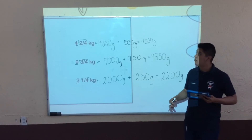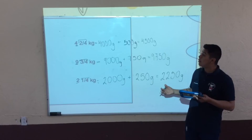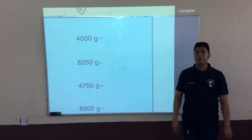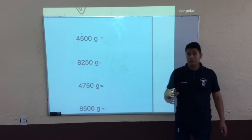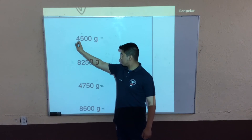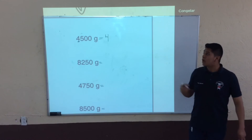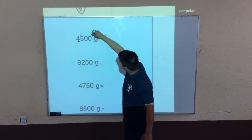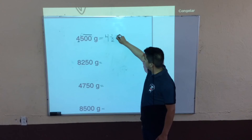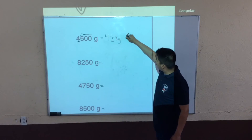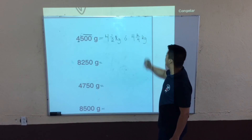Ya terminamos con las conversiones de kilogramos a gramos. Ahora nos vamos con las de gramos a kilogramos. Recordemos que siempre los miles van a pasar como el entero. En este caso el primero tenemos 4000, entonces este lo vamos a pasar como el entero. ¿Cuánto equivale 500 gramos a una fracción? Equivaldría a un medio de kilogramos.